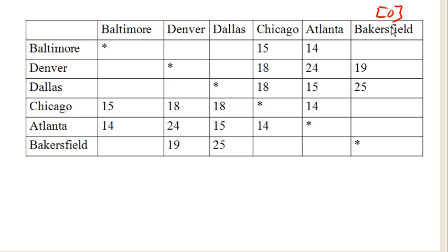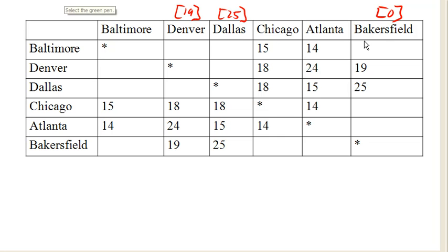Bakersfield is our current vertex, so we're going to go backwards from there. From Bakersfield, Denver is 19 hours away, and Dallas is 25 hours away. So now we're done with Bakersfield, and we move on to the next closest city, which is Denver.